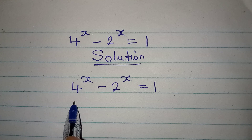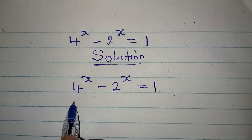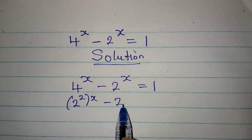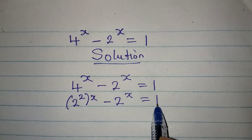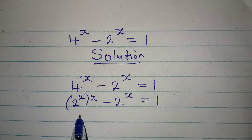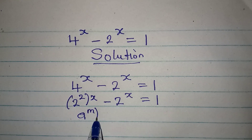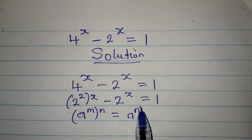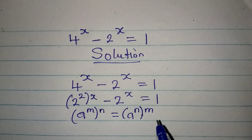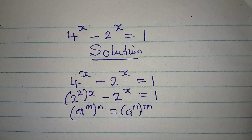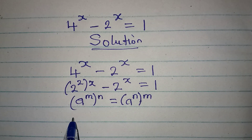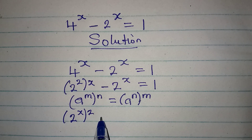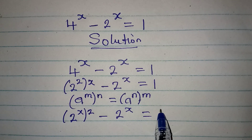So what do we do? Remember that 4 here is the same as 2 to the power of 2. Then we have x, so we get 2 to the power of 2x, then minus 2 to the power of x, equal to 1. Now remember that if you have a to the power of m to the power of n, this is the same as a to the power of n to the power of m — you can rearrange the powers. So I will do the same thing here: I have 2 to the power of x, then 2 will go out, minus 2 to the power of x equals 1.